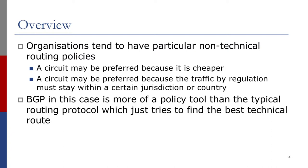An example is a particular circuit may be cheaper or may have more bandwidth and the organization would prefer to use that circuit. Alternatively, they might have restrictions on traffic having to stay within particular jurisdictions so that traffic cannot flow over particular links.